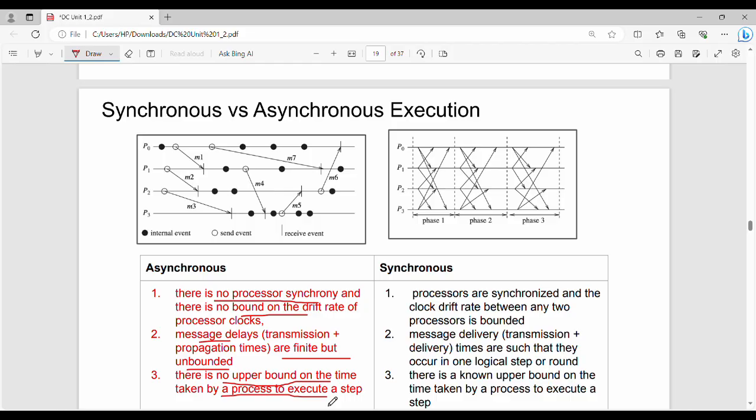So the first point is that the processor is not synchronized and drift rate has no upper bound. Second point is that the message delay is finite but it is unbounded. Point number three is that the time to execute has no upper bound.